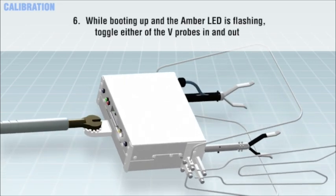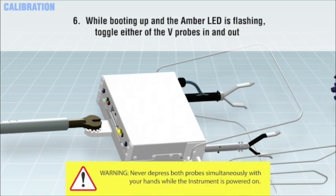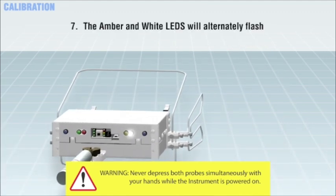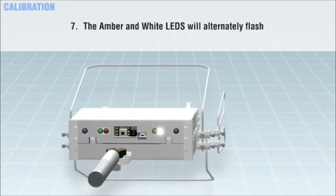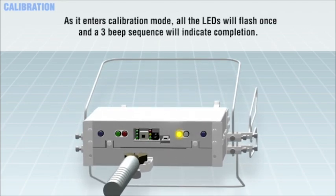While the instrument is booting up and the amber LED is flashing, toggle either of the V-probes in and out to initiate a calibration. The amber and white LEDs will alternately flash while initiating calibration mode. As it enters calibration mode, all the LEDs will flash once and a three-beep sequence will indicate completion.